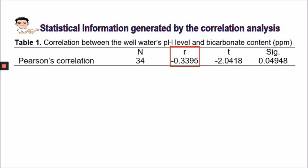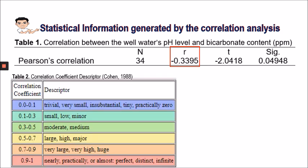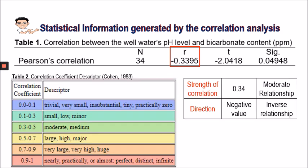The value of r gives us information about the strength and direction of the correlation. For the strength of the correlation, we will be using the correlation coefficient descriptor by Cohen 1988, wherein 0.34 here refers to a moderate relationship.